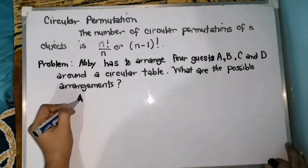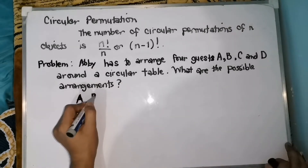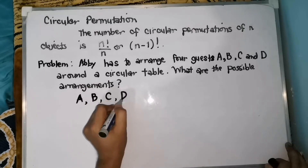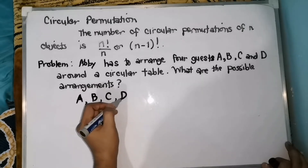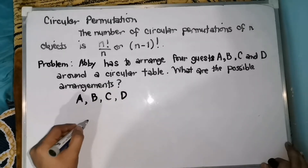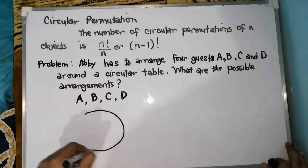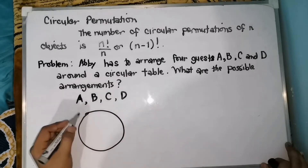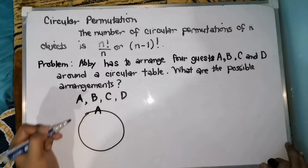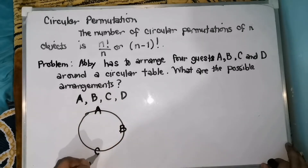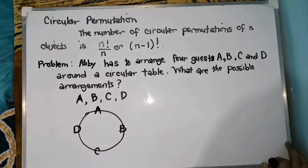Example, A, B, C, D — so this will be our first arrangement. Ilagay natin sa isang circular table. For example, A, B, C, and D.